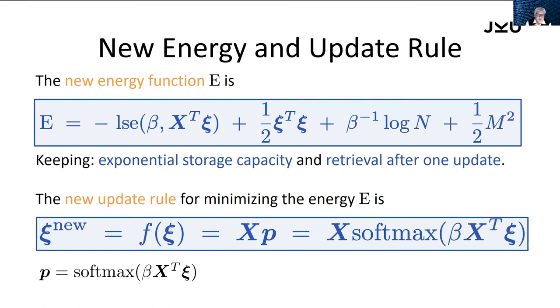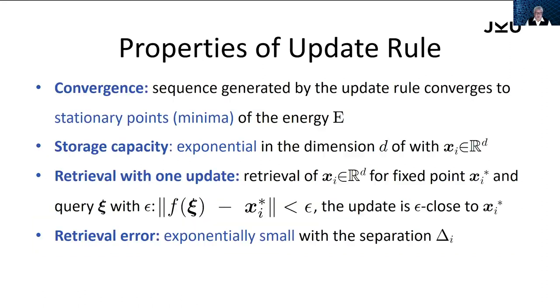These are the new energy functions, the new update rule to make the modern Hopfield networks continuous. The update rule has very nice properties, like it converges to a local minimum, it has high storage capacity, there's retrieval only with one update, the patterns are retrieved, and the retrieval error is exponentially small.